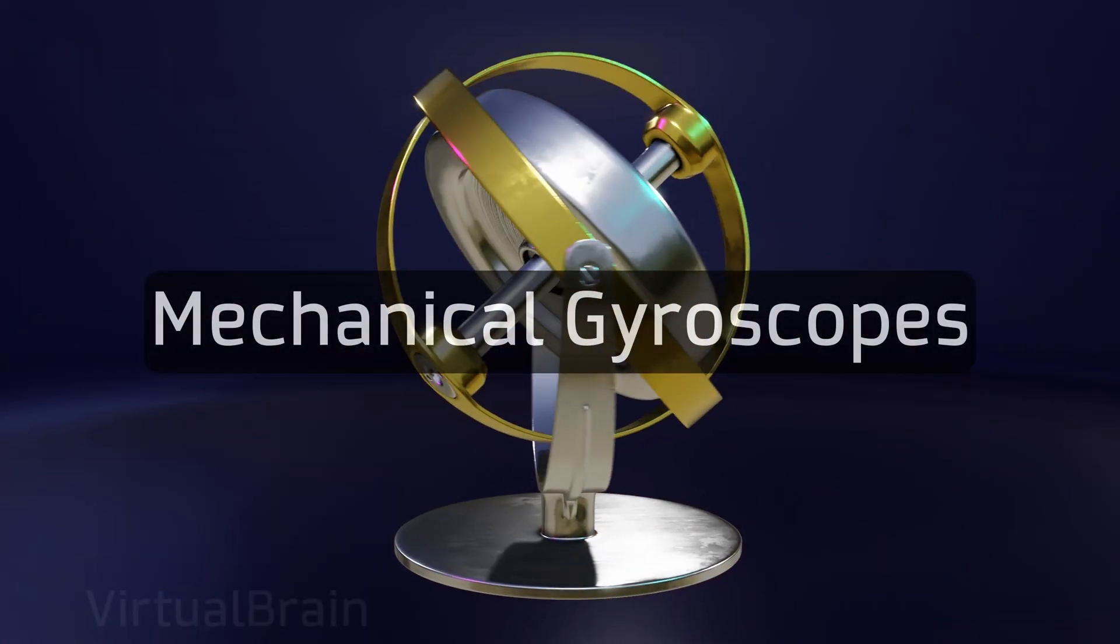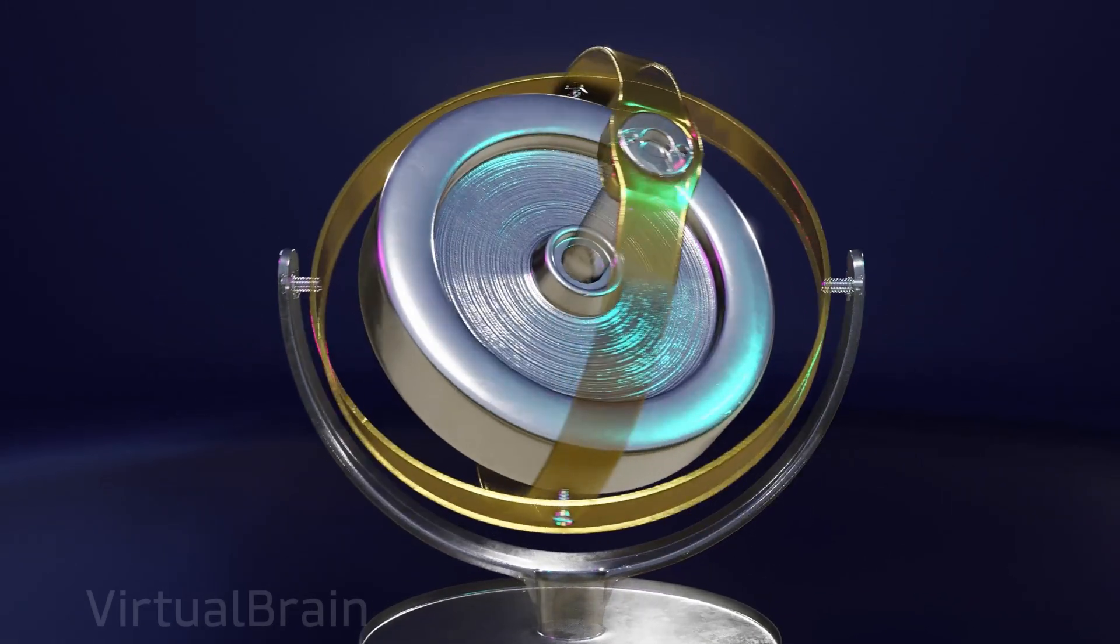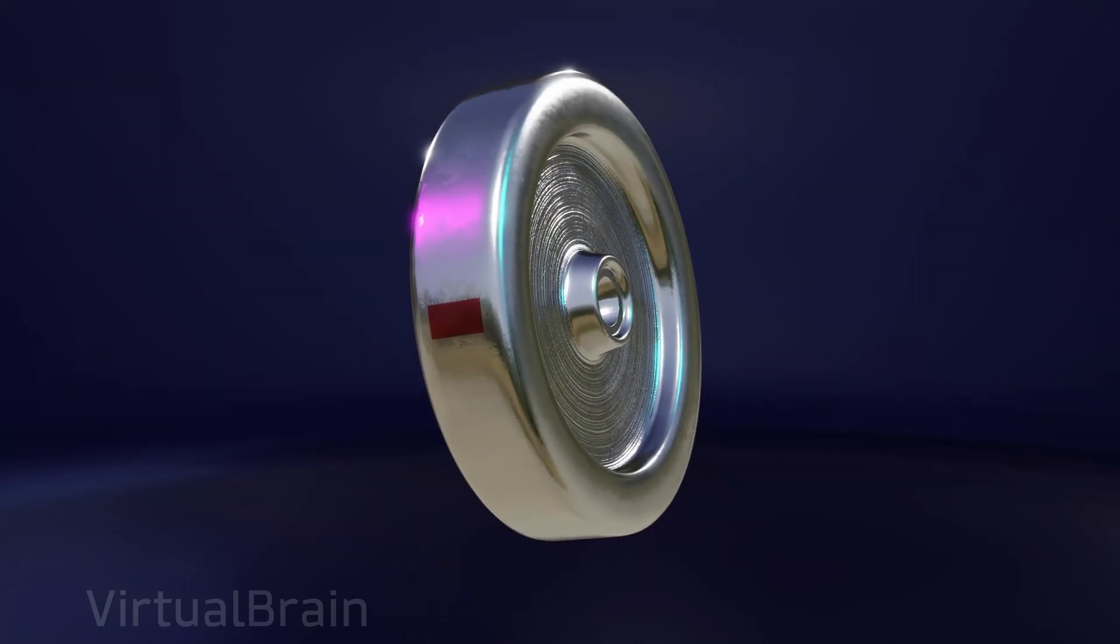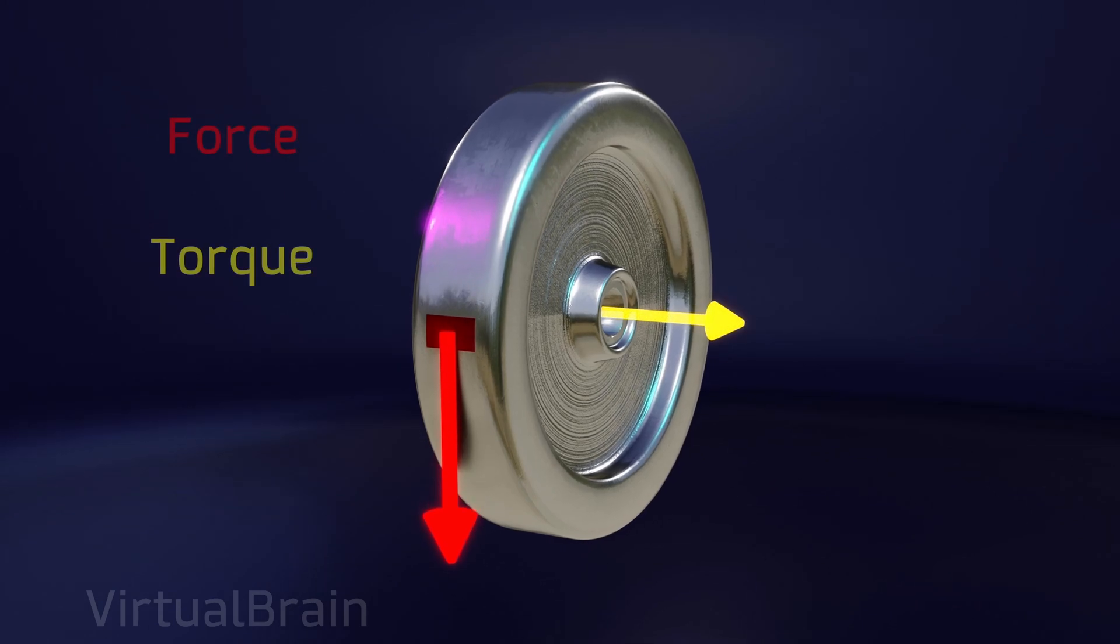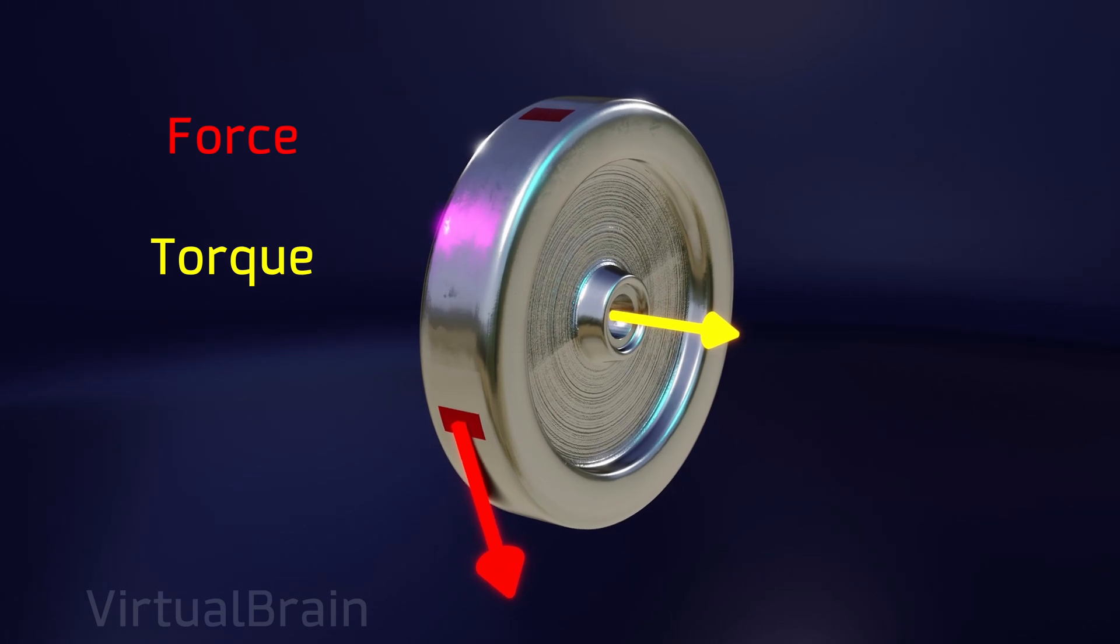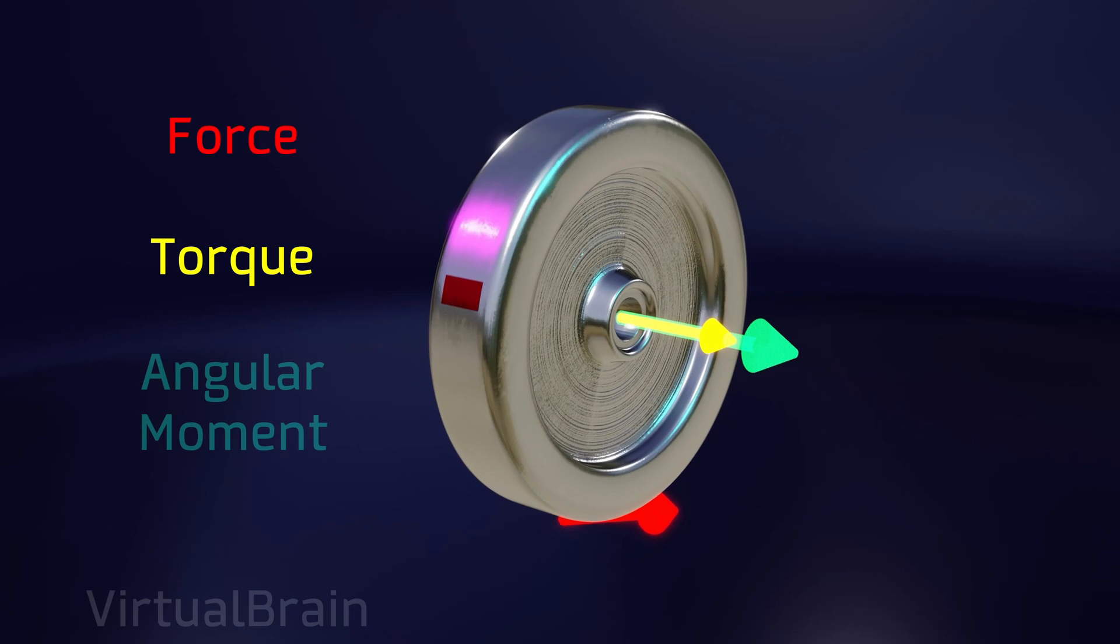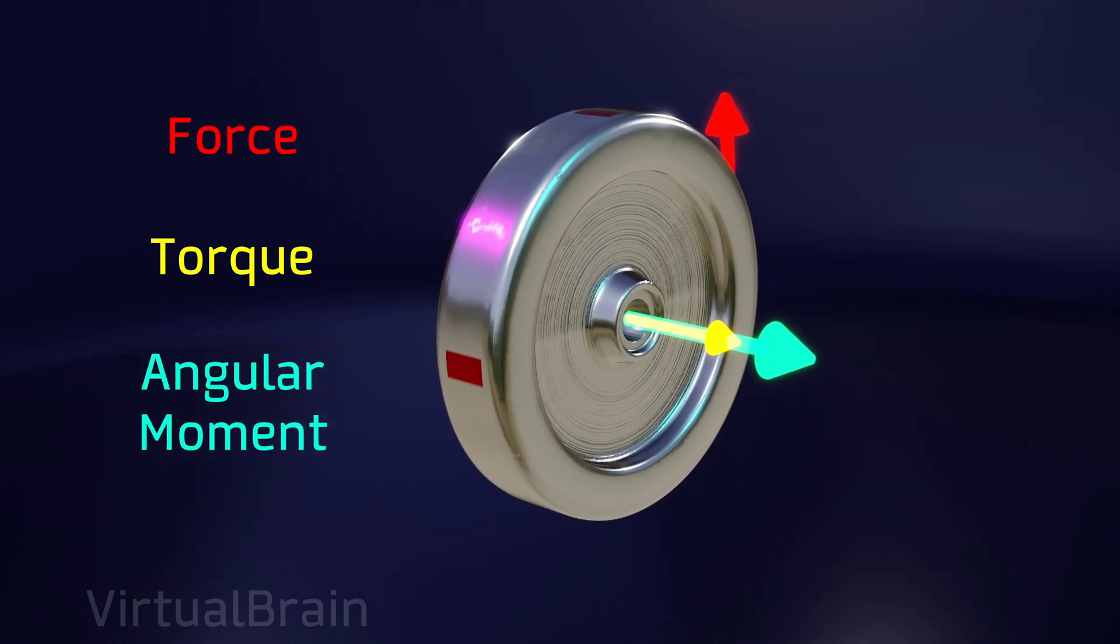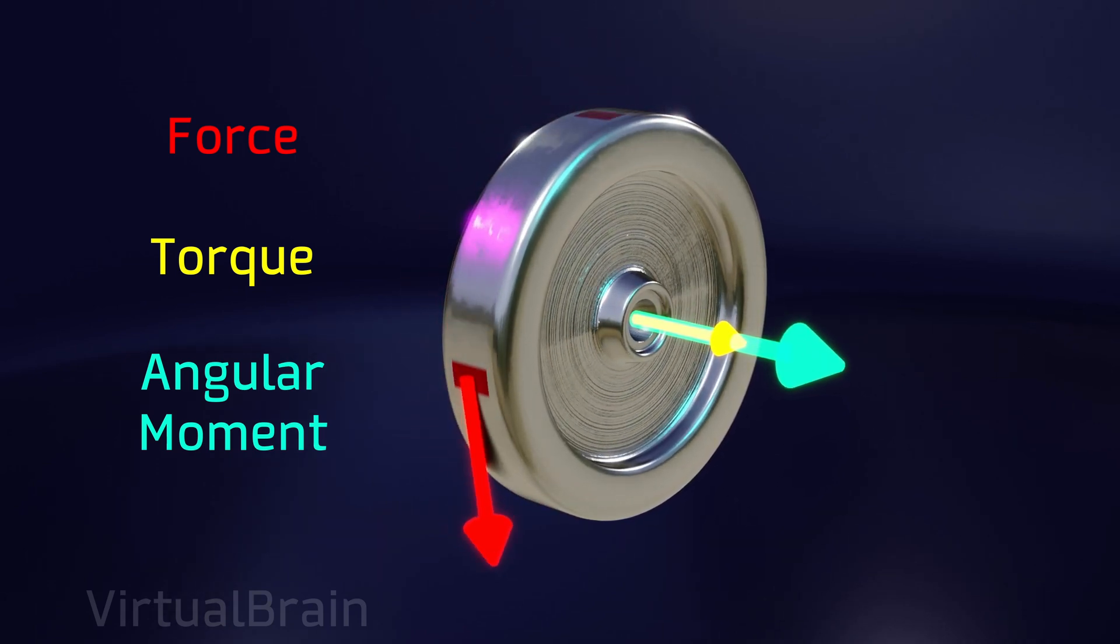Let's start by looking at how mechanical gyroscopes work, and to do that we need to understand what torque and angular momentum are. In a system with an axis of rotation, when we apply a force at a point away from the axis, a torque is generated, which rotates the system and is represented as a vector parallel to the axis of rotation. In addition, when a system is rotating, it has an angular momentum as well, which is also represented by a vector parallel to the axis of rotation and is determined by two factors.